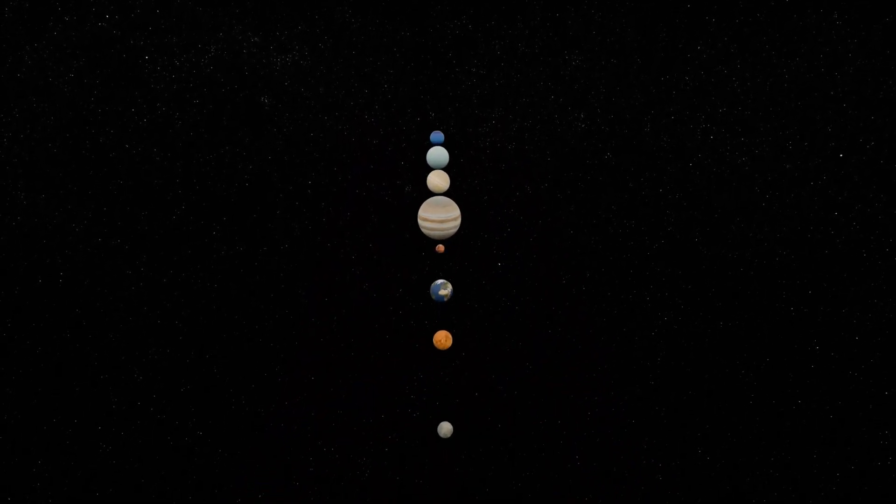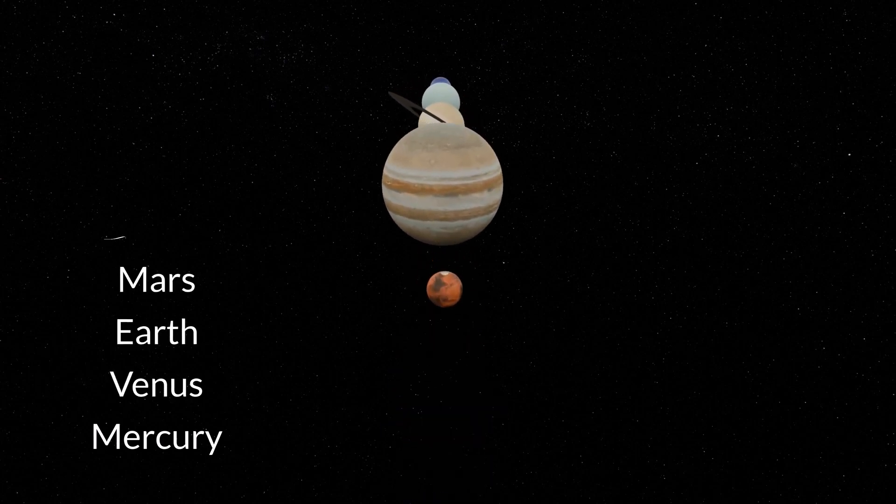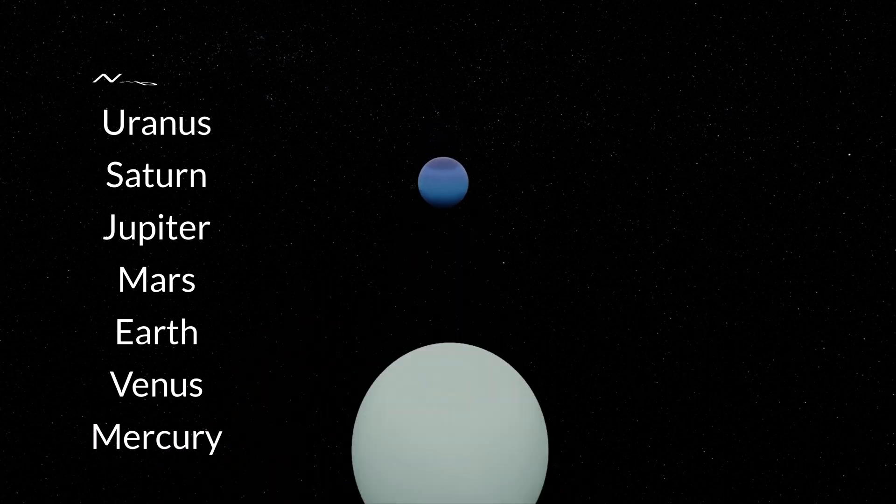Our solar system is made up of eight planets which include Mercury, Venus, Earth, Mars, Jupiter, Saturn, Uranus, and Neptune.